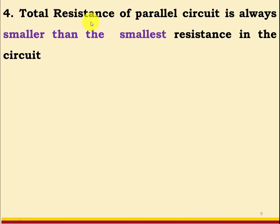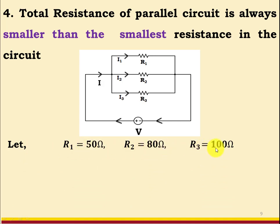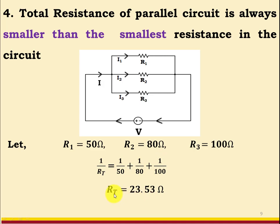Characteristic number four: the total resistance of a parallel circuit is always smaller than the smallest resistance in the circuit. For example, suppose there are three resistors R1 = 50 Ohm, R2 = 80 Ohm, and R3 = 100 Ohm in parallel. Then 1/R_T = 1/50 + 1/80 + 1/100, giving R_T = 23.53 Ohm. It is obvious that the equivalent resistance 23.53 is less than 50, the smallest resistance. So the equivalent resistance of a parallel circuit is smaller than the smallest individual resistance.